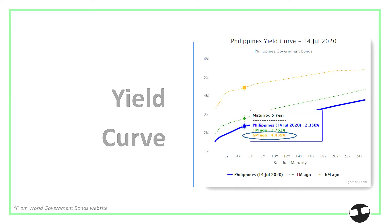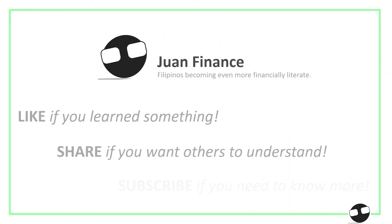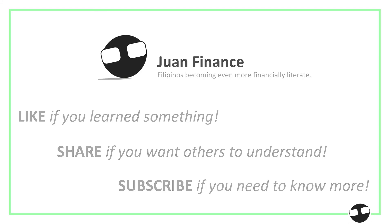So if you're trading stocks, you're looking at the PSEI. If you're trading bonds, this is the chart you should be looking at — the yield curve. Okay, so that will be all for now. Thank you very much for watching, and see you next time.